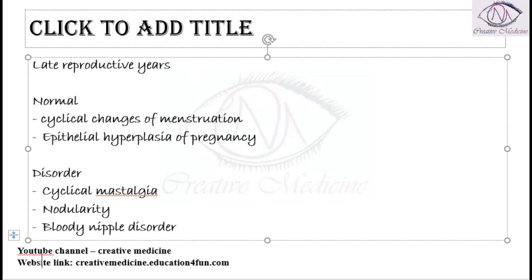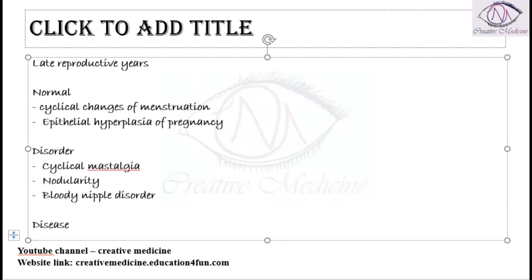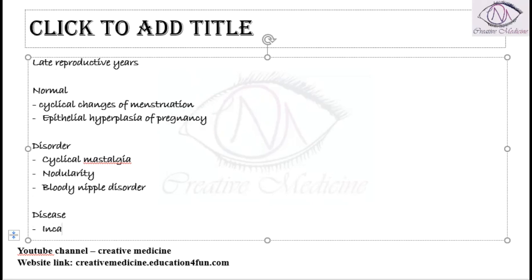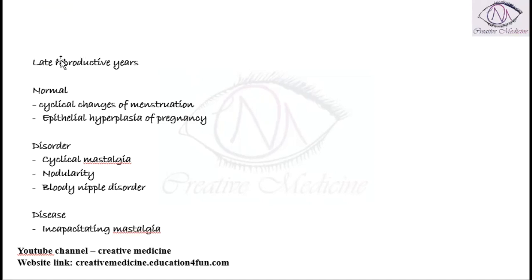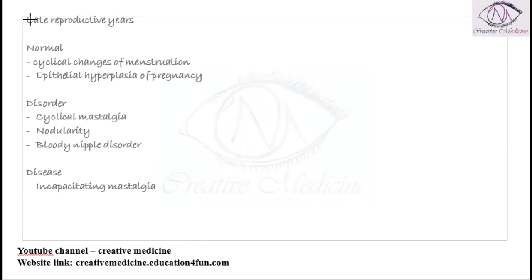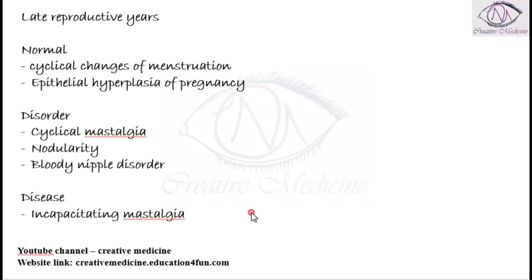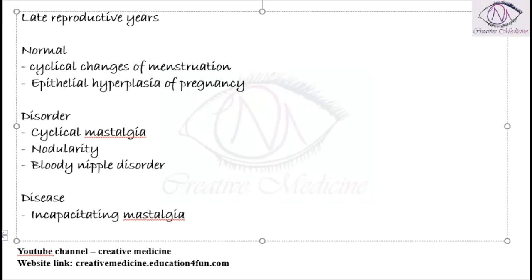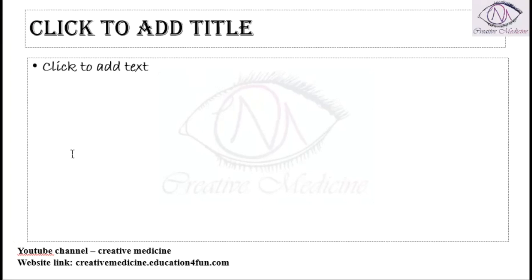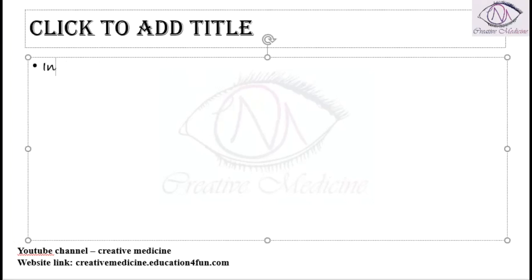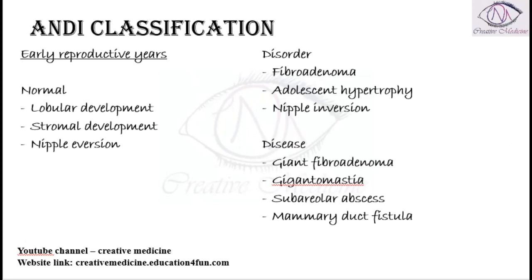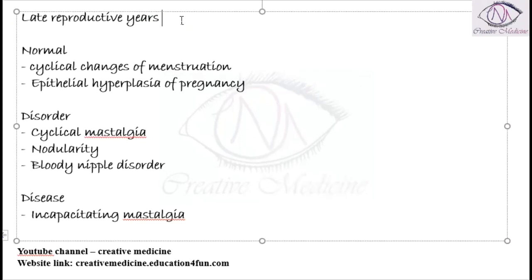What about the disease seen in Late Reproductive Years? The disease is incapacitating Mastalgia, due to aberrations in normal development and involution. Late Reproductive Years mainly includes 25 to 40 years of age.